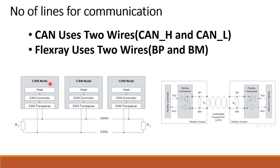Looking at the diagrams: in a CAN network, each node consists of a Host, CAN Controller, and CAN Transceiver, connected via CAN High and CAN Low lines, with termination resistors at each end. Similarly, FlexRay uses a FlexRay Controller and FlexRay Transceiver connected via Bus Plus and Bus Minus, also with termination resistors.